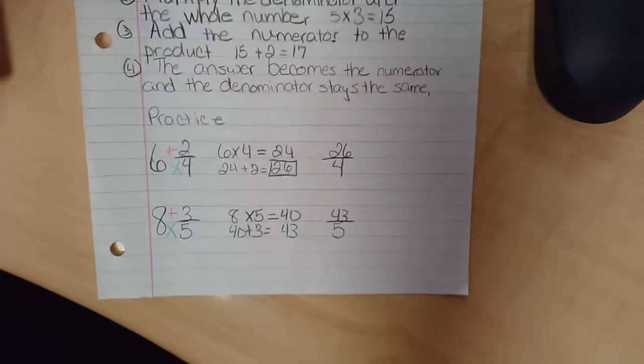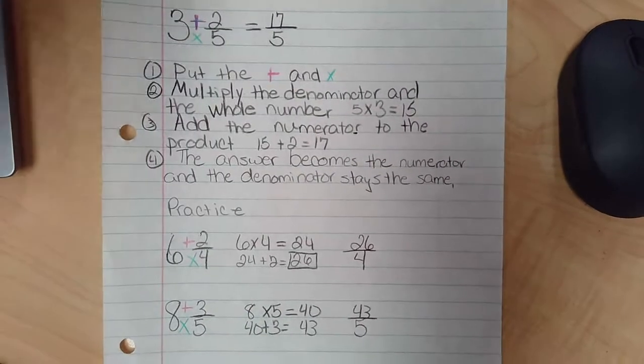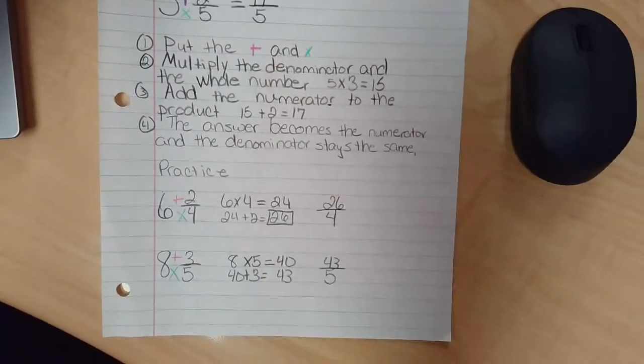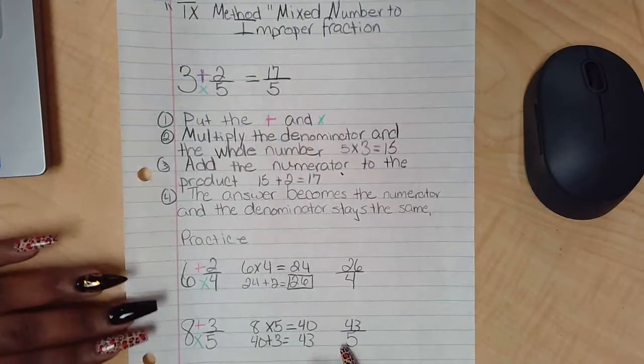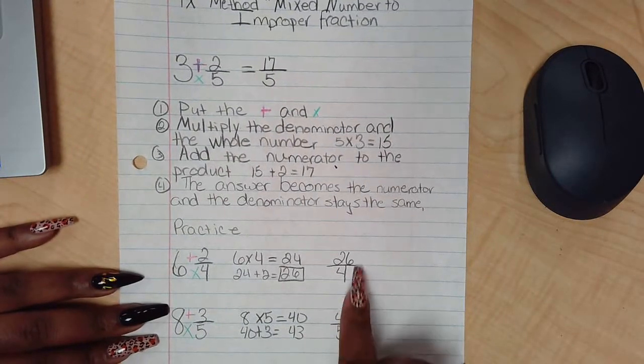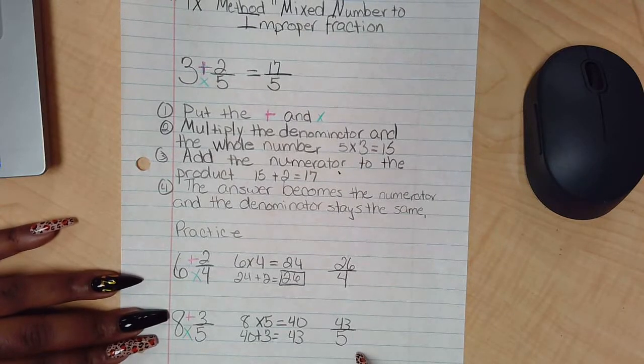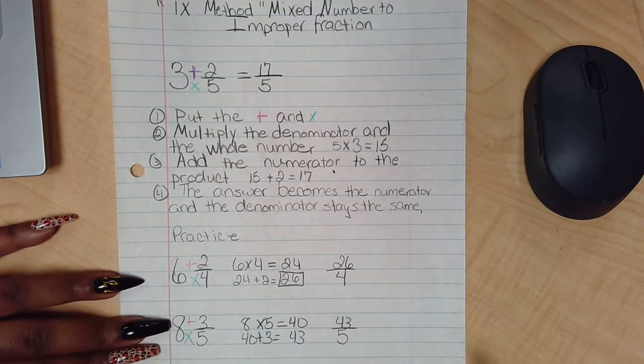So boys and girls, that is improper fractions. These are improper fractions, and here's the steps to do mixed numbers to improper fractions.